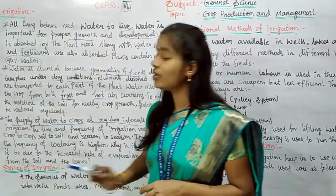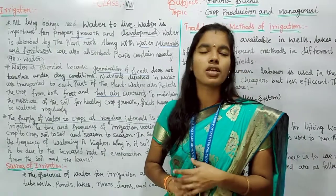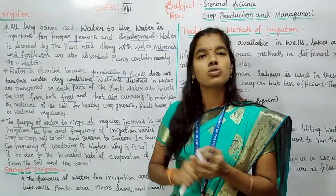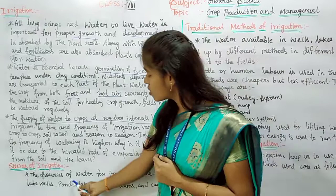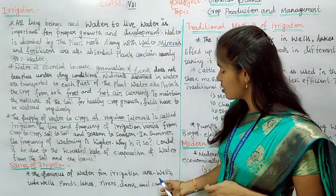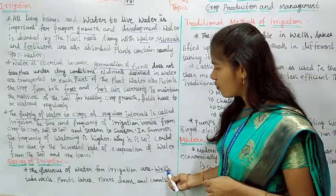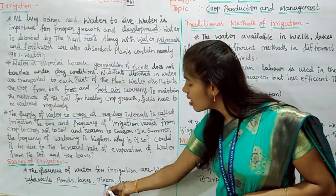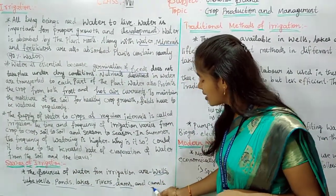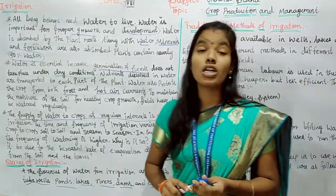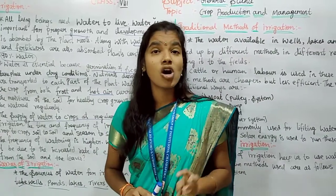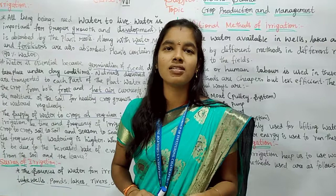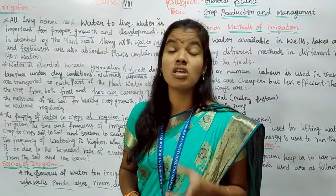The sources of water for irrigation are: wells, tube wells, ponds, lakes, rivers, dams, and canals.